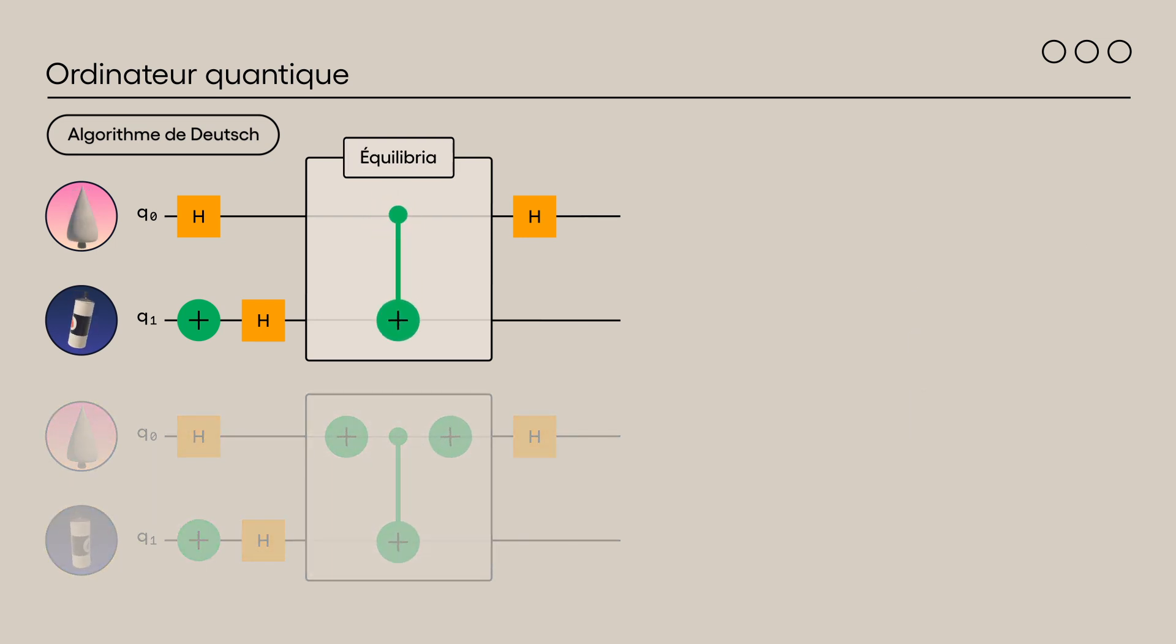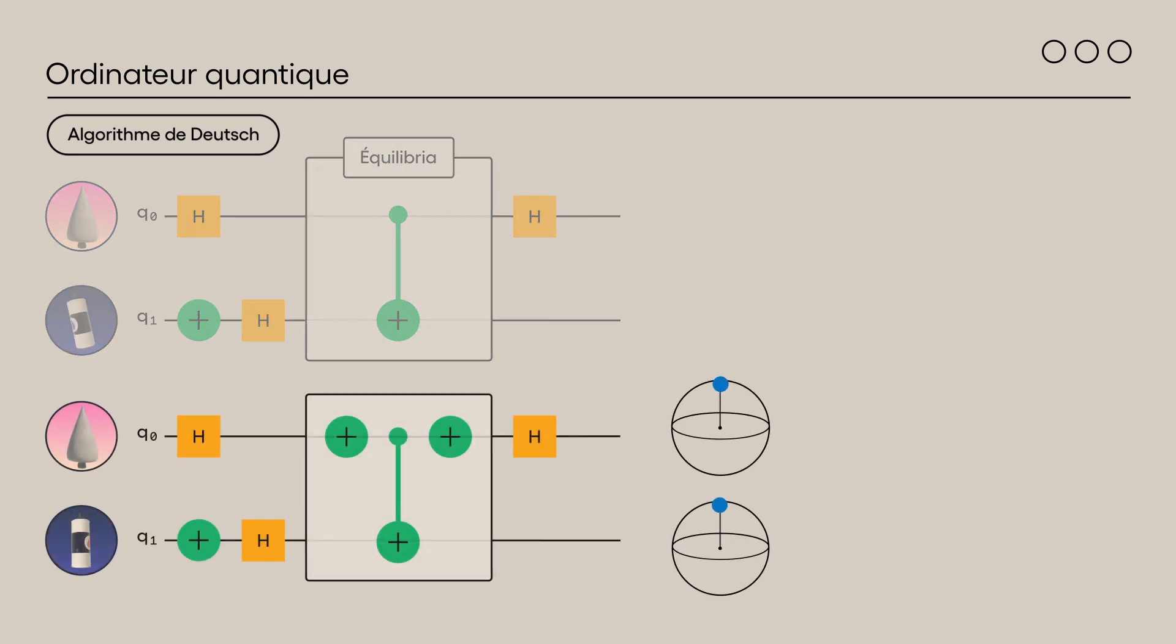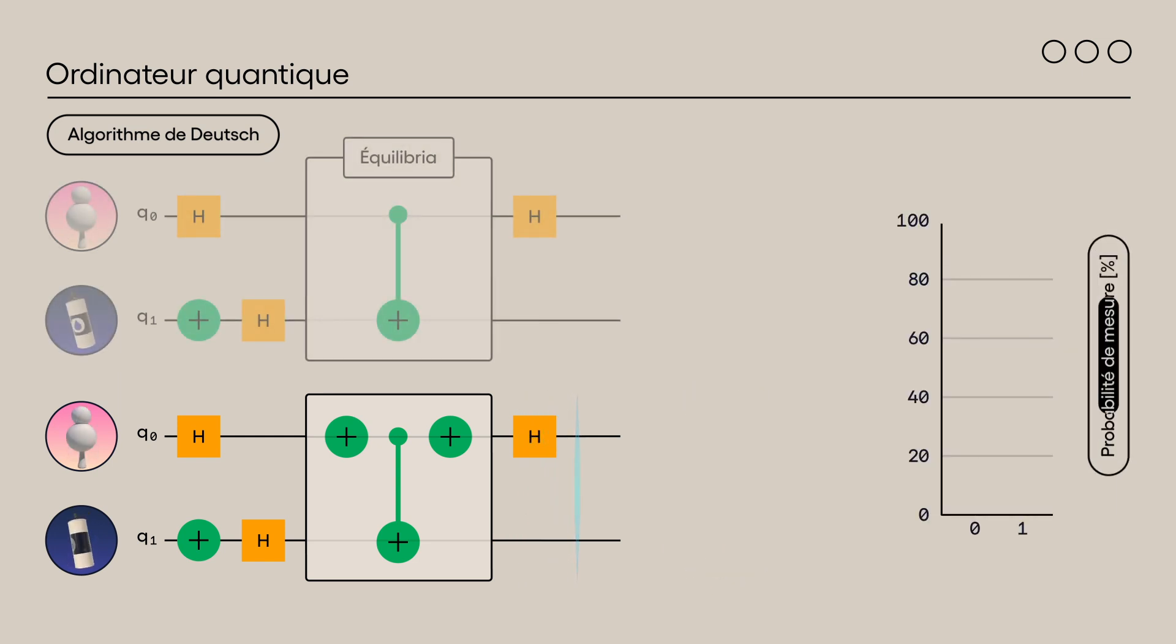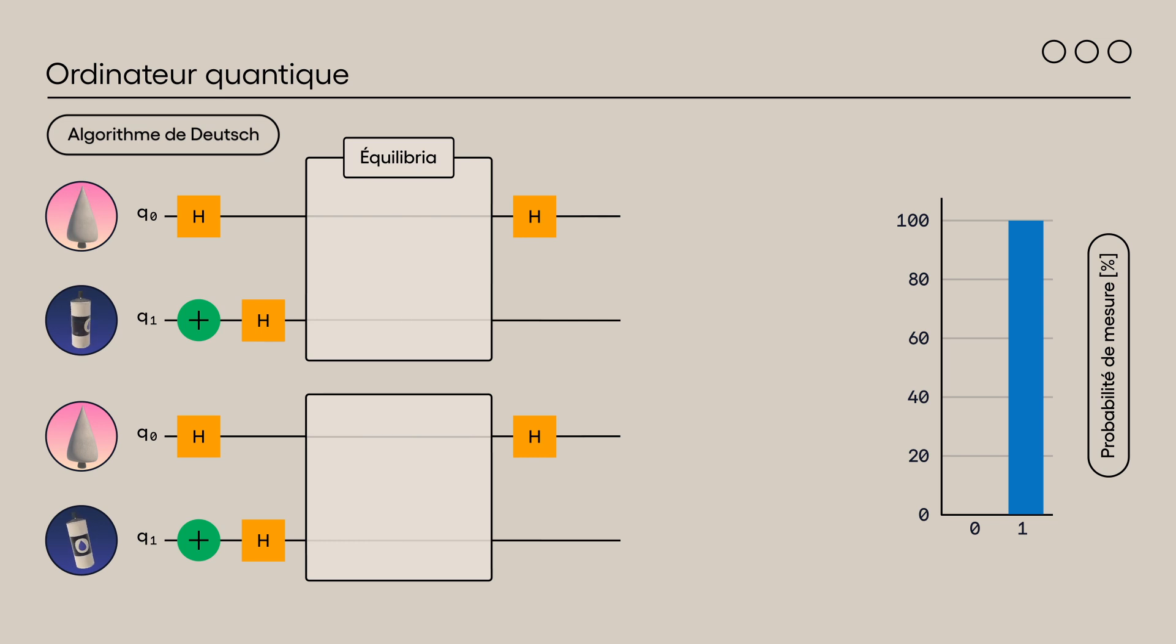Si c'est plutôt Equilibria qui applique la peinture, les circuits sont les suivants. Les résultats de mesure sont équivalents dans les deux cas. La mesure de Q0, c'est-à-dire l'observation du parc où se trouve la statue à la fin de l'algorithme, permet donc d'identifier quel vandale a sévi.